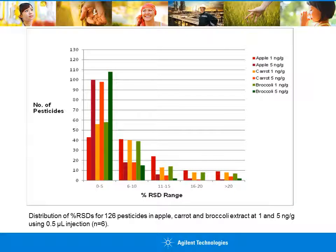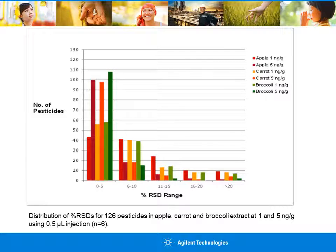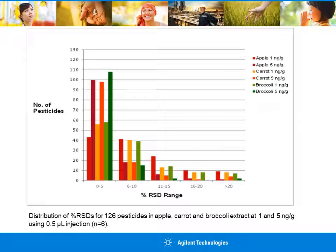Calibration standards for the mixture of 126 individual pesticides and groups of pesticide isomers were prepared spiking the extraction blank matrix at 1 to 100 nanograms per gram. The figure shows the distribution of percent RSD for the 126 pesticides in apple, carrot, and broccoli at 1 and 5 nanograms per gram using a 0.5 µL injection volume. The limit of quantitation observed during this study was estimated based on: percent RSD less than or equal to 20% and signal-to-noise greater than 10 for calculated amounts.